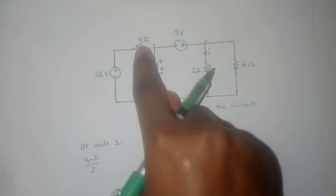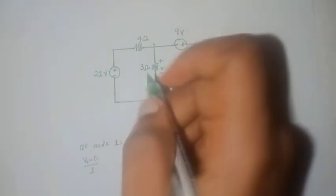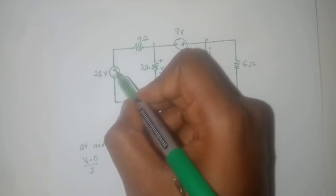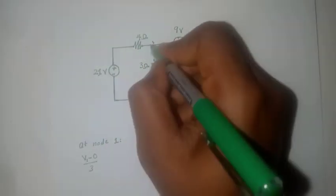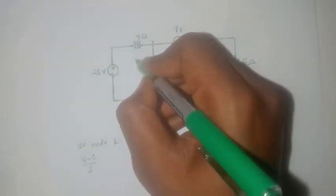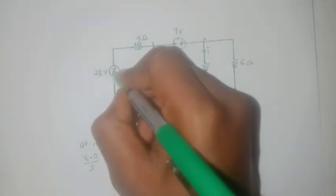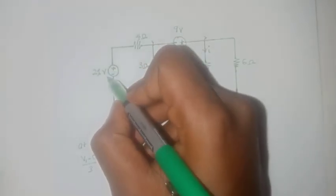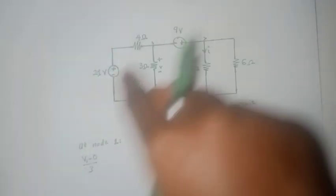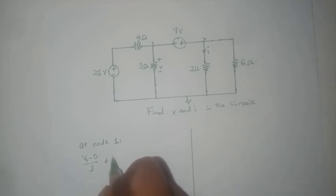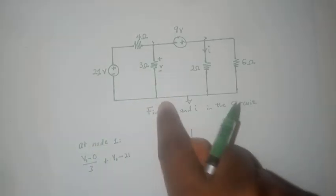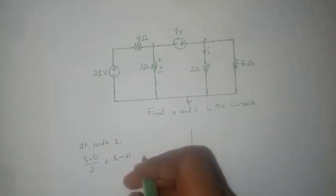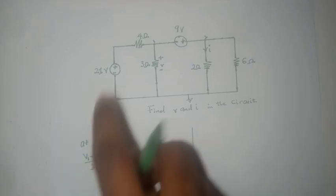Then the current flowing through this branch would be v1 minus 21, because these are series opposing voltages. The voltage v1 and the 21 volts power source are series opposing, so that would be v1 minus 21 then minus zero, divided by four.